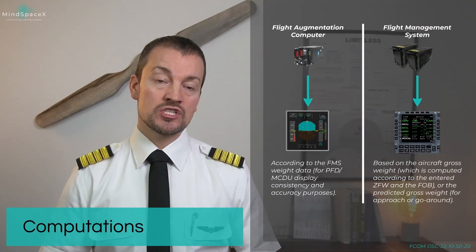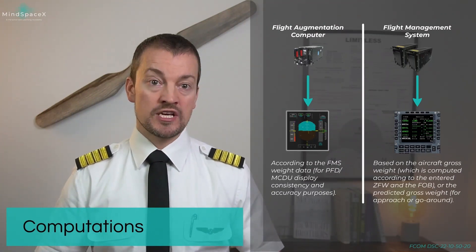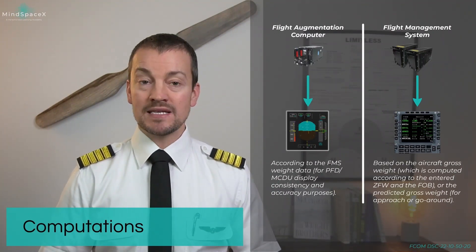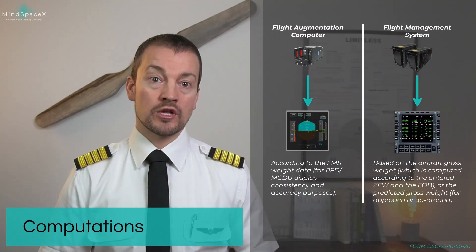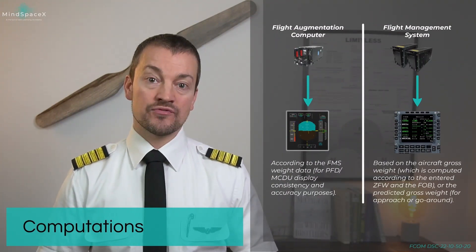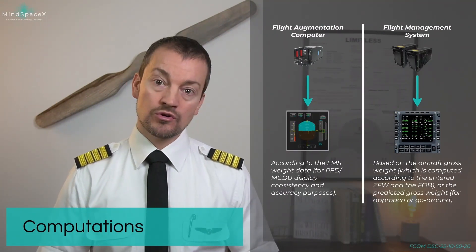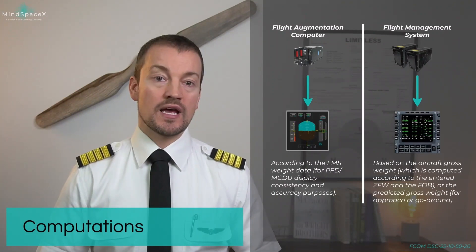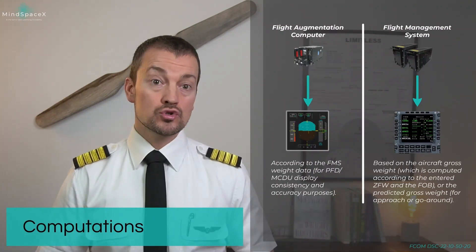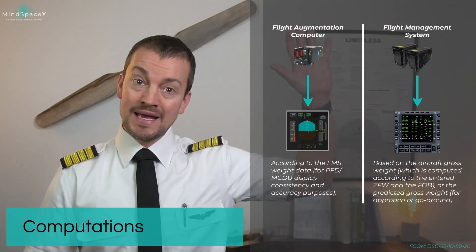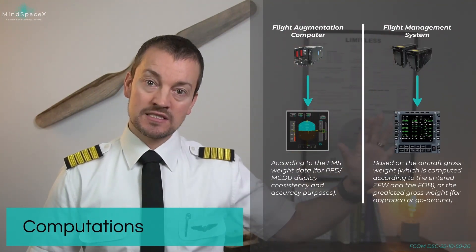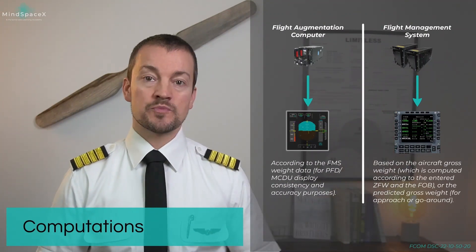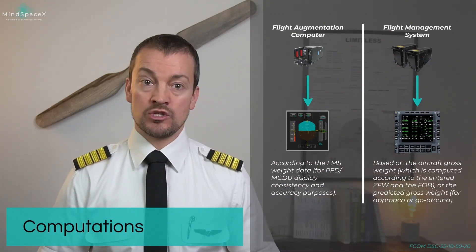The speeds you see on the approach and takeoff pages in the MCDU are based on the aircraft's gross weight, which is computed according to the entered zero fuel weight and zero fuel CG values and the fuel onboard, or the predicted gross weight — this is for approach and go-around. So there are two sources for speed computation: mainly the FAC computers, and the flight management and guidance system, which calculates its own speeds to be displayed on the MCDU pages.